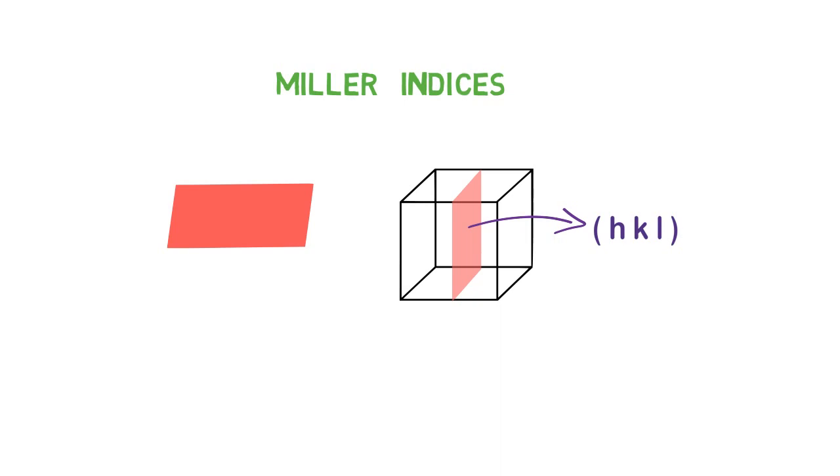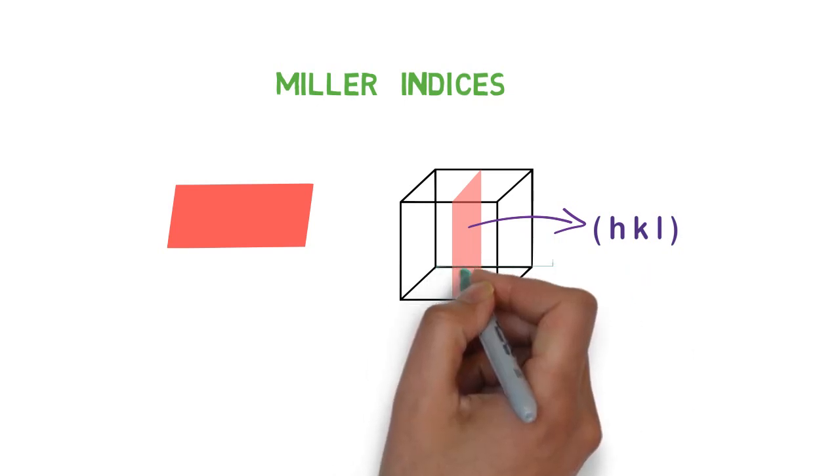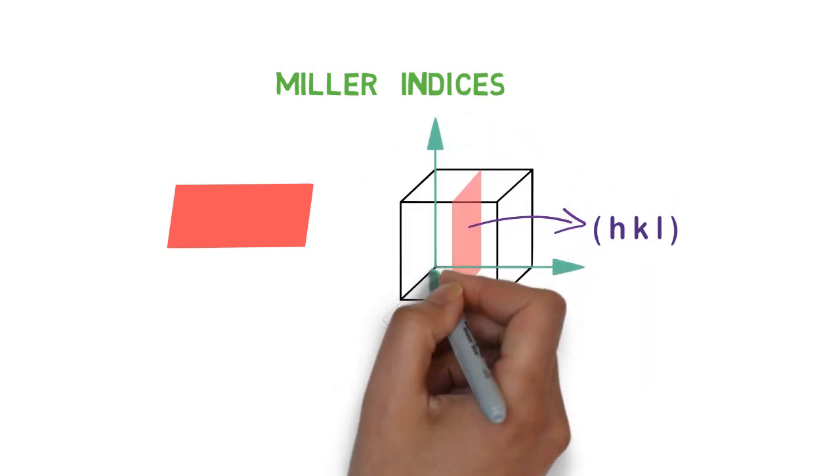Miller Indices are expressed as the reciprocal of intercepts made by the plane on the three rectangular axes. All the reciprocals are converted to whole numbers so that it can be expressed by three smallest possible integers.